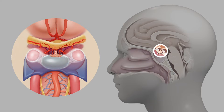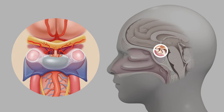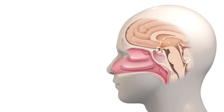Tumors can arise from within the pituitary gland and then grow upwards to compress the optic apparatus, or they can grow to each side to invade the cavernous sinus. There are many other tumors that can arise in this area — above the pituitary gland, below, or inside the cavernous sinus.